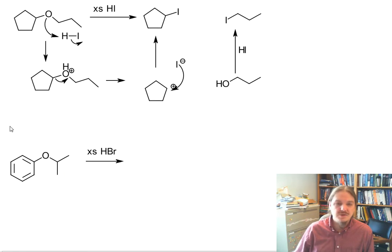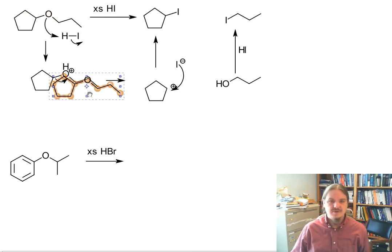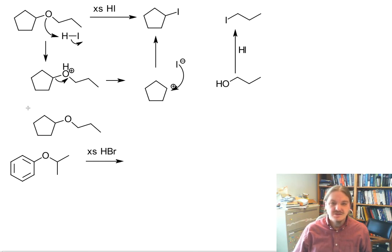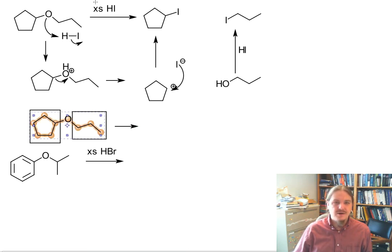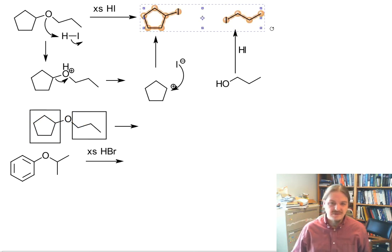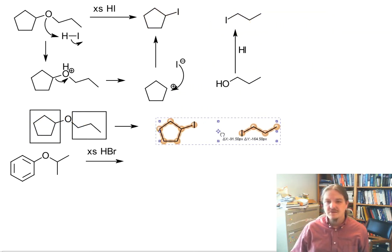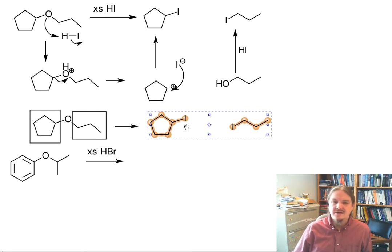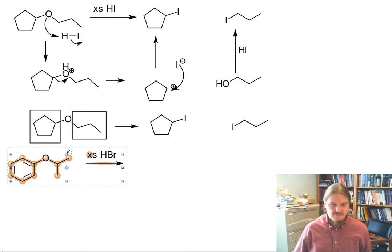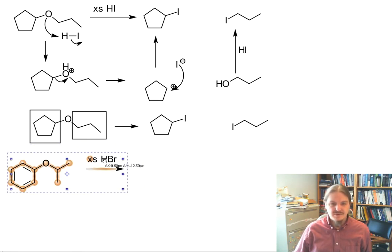Another approach though, is to just look at the two hydrocarbon groups that are on either side of the ether and the product of the acidic cleavage is just going to be breaking it apart and replacing the carbon oxygen bonds with carbon iodide bonds or carbon bromine bonds or whatever the acid may be.